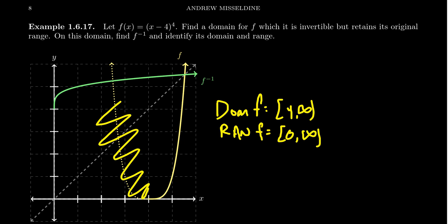So by throwing away the left side of the graph, you don't lose any of the y coordinates. We're only throwing out duplicate y coordinates after all. So we still retain the original range, but we've now restricted the domain so that it passes the horizontal line test.